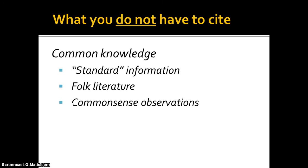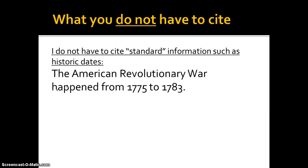Some other things you don't have to cite fall under what's called common knowledge: standard information, folk literature, and common sense observations. For example, I don't have to cite standard information like historic dates. The American Revolutionary War happened from 1775 to 1783 — I don't have to cite that. I don't have to cite holiday dates or things like that. These are called standard information because they're generally known.